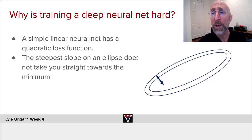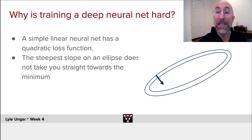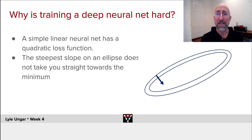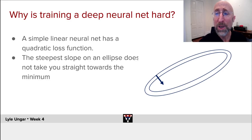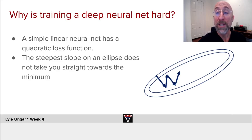But what happens even in a nice quadratic loss function? We're sitting at some point, we compute the gradient, and the gradient going down the loss function takes us in a certain direction. In practice we take a small step — maybe too small or slightly past. The key thing to note is that the gradient down the slope does not point to the global minimum or even the local minimum; it points in a different direction. Taking a sequence of steps, you zig-zag down many times before reaching the minimum.